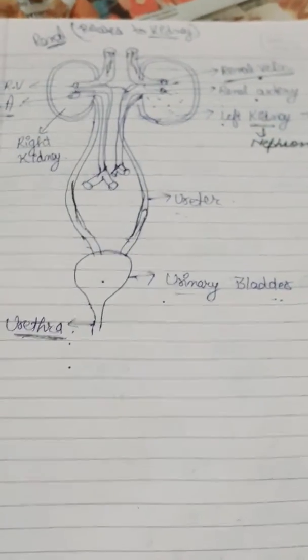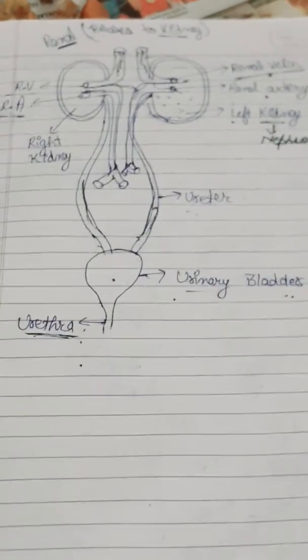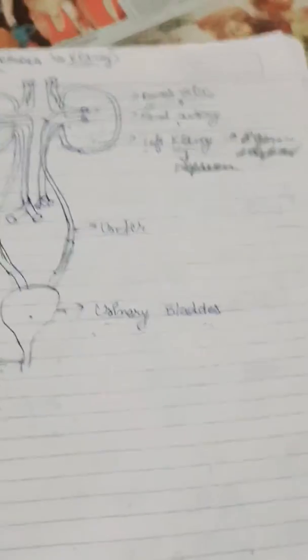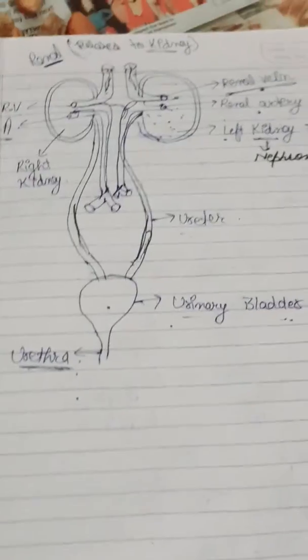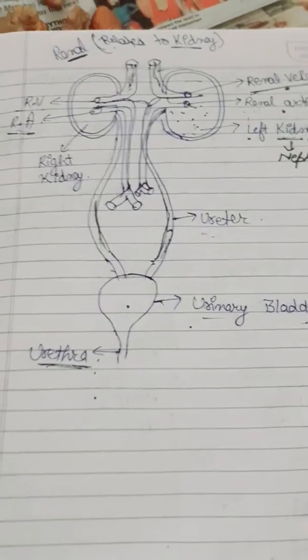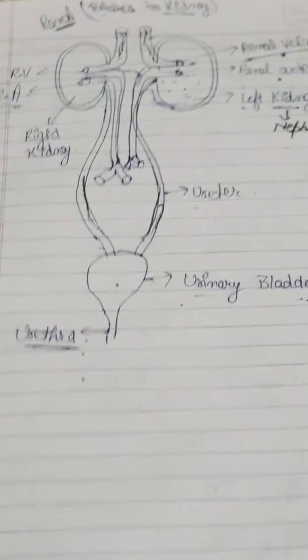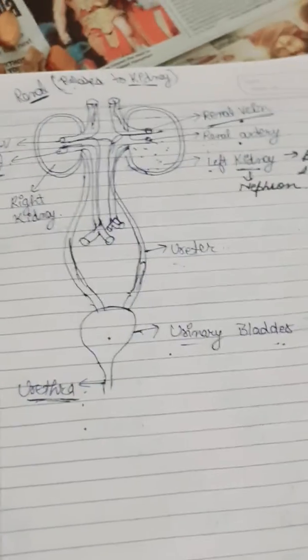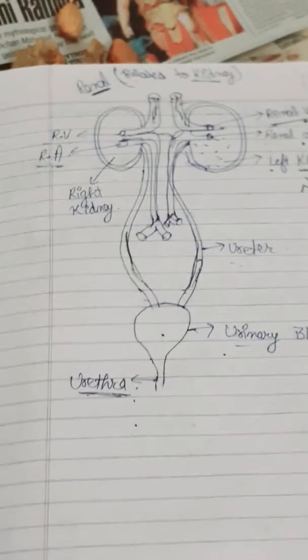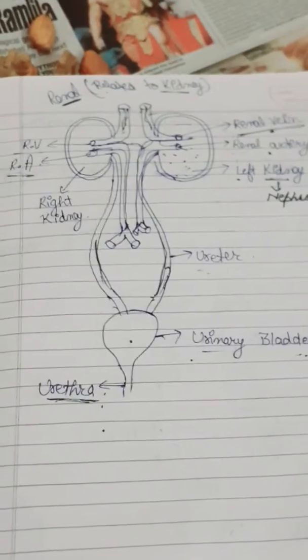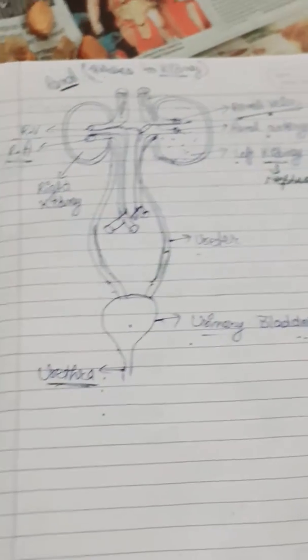Our excretory system is present in the dorsal abdomen of our body, which means it is located at the back portion of our body.